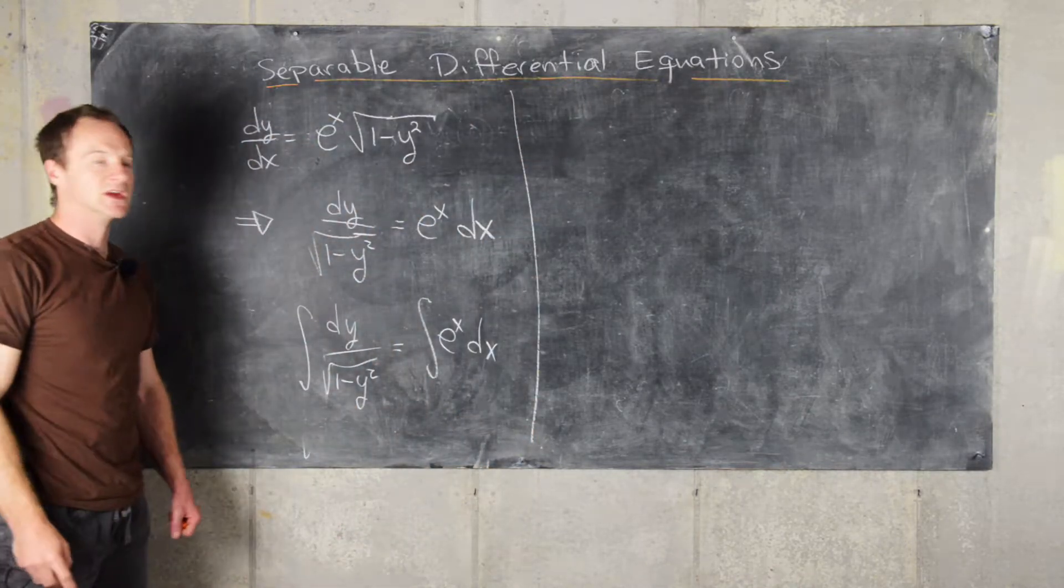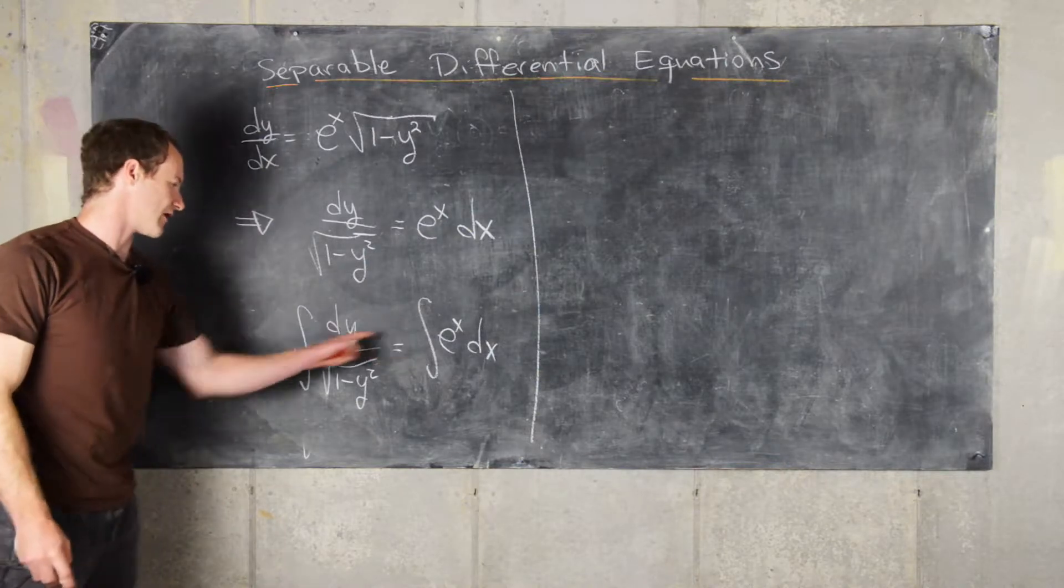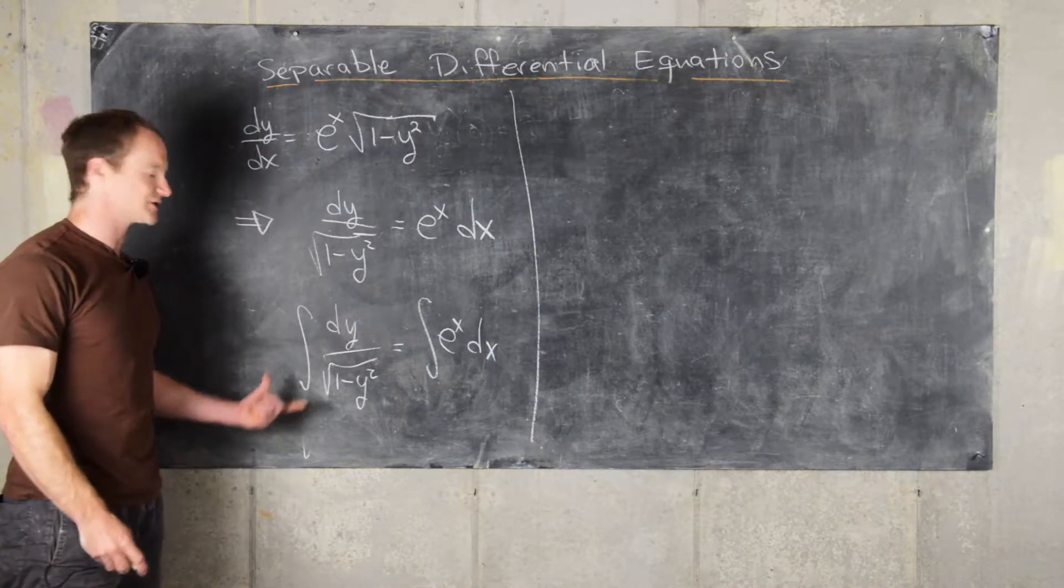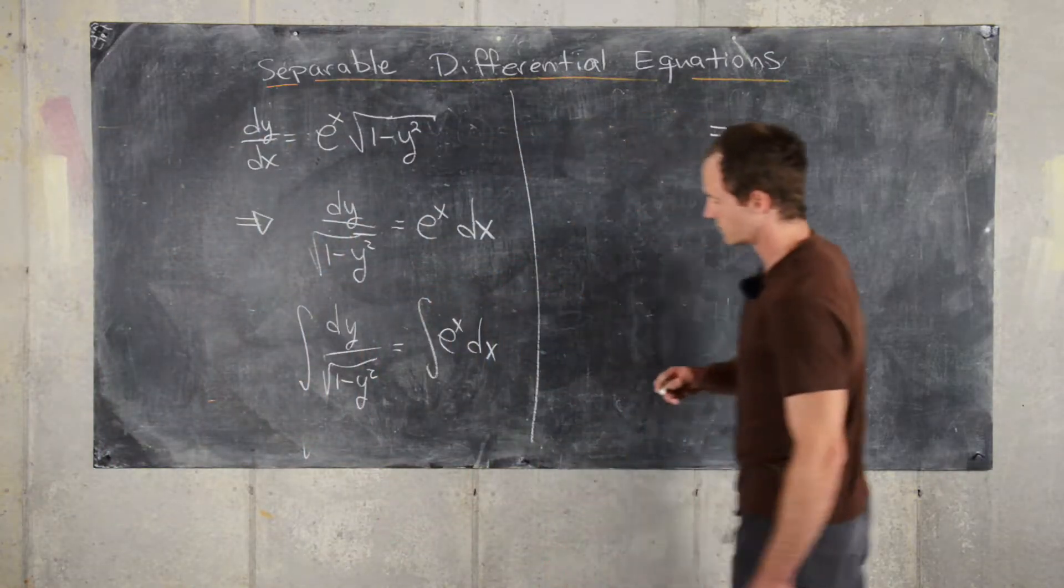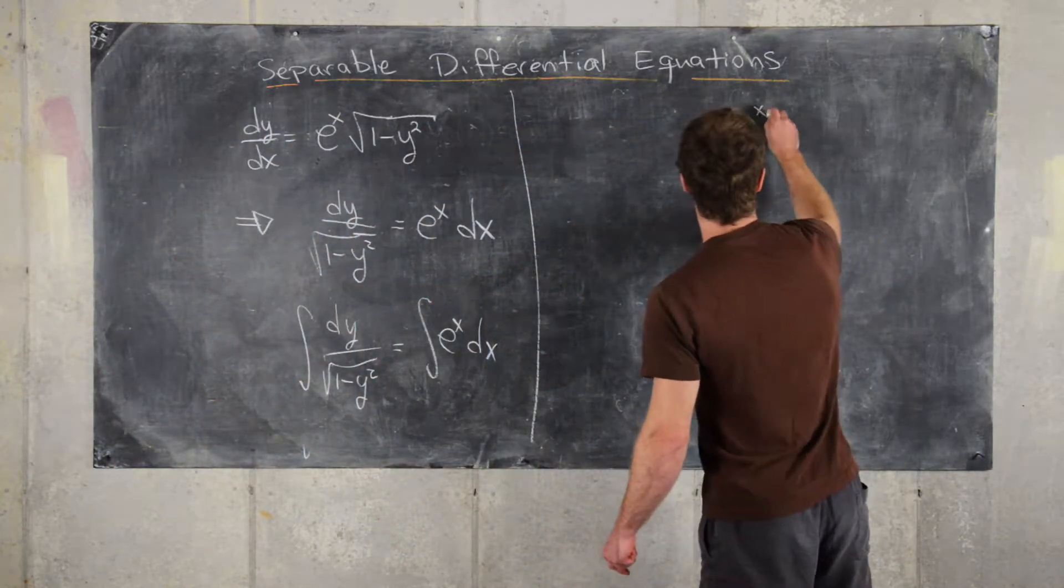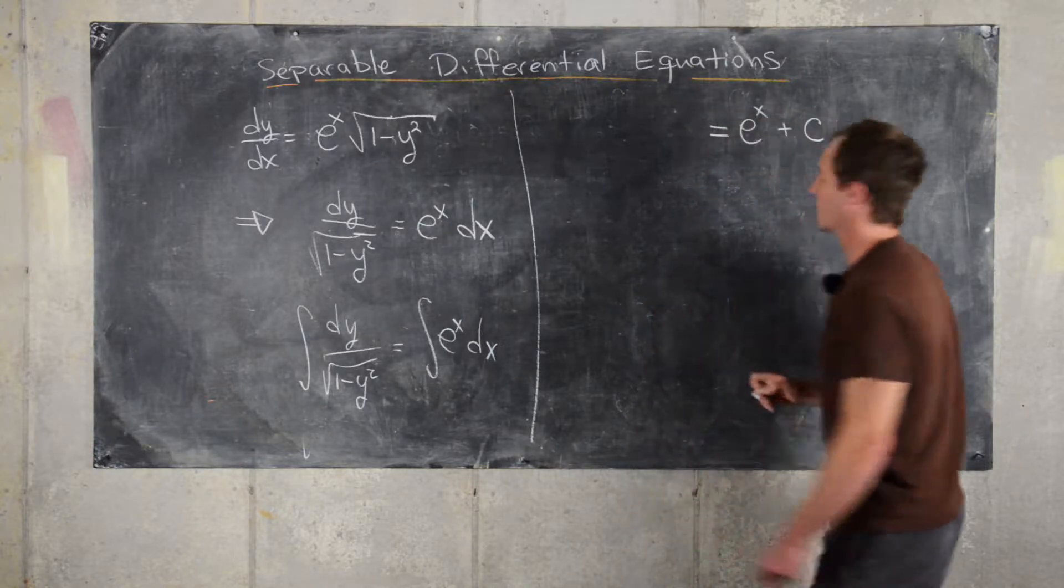Okay, great. So now we're ready to recall from integral calculus what these two antiderivatives are. So the right-hand side is pretty easy. The antiderivative of e to the x is e to the x plus some constant.